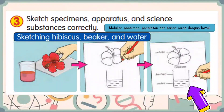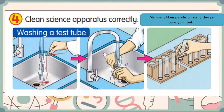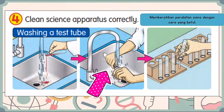Then remember to label it. Kemudian jangan lupa untuk melabel. The fourth manipulative skill is to clean science apparatus correctly. Membersihkan peralatan sains dengan cara yang betul. When washing a test tube, remember to use a brush or a sponge, then dry it on a drying rack. Gunakan span atau brus untuk mencuci tabung uji, kemudian keringkan pada rak pengeringan.